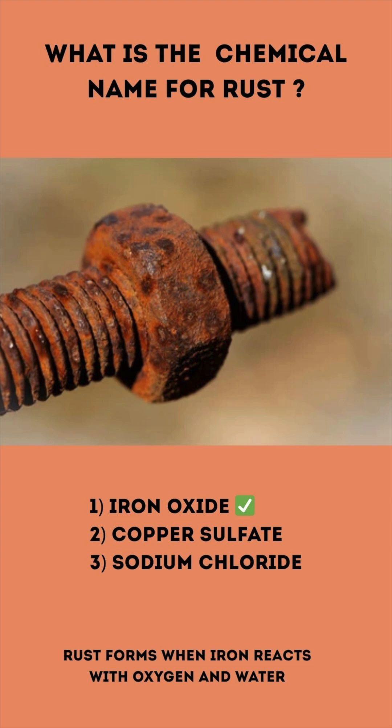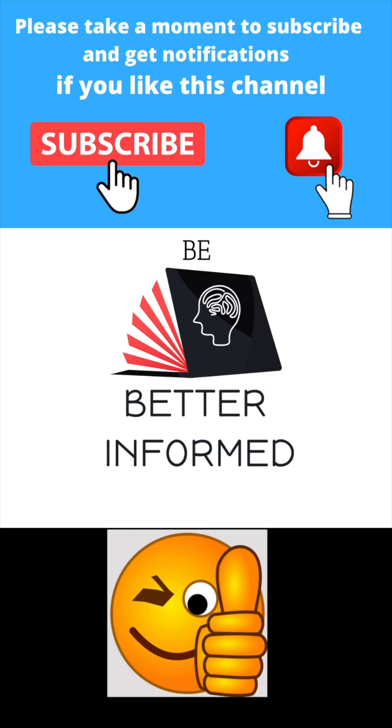The correct answer is 1. Iron oxide. Rust forms when iron reacts with oxygen in water.